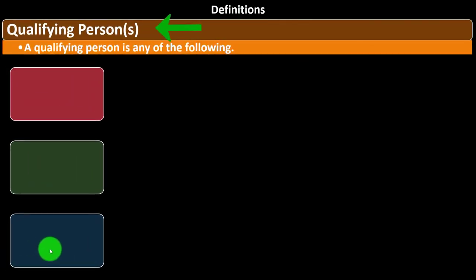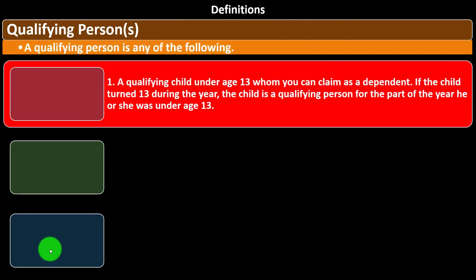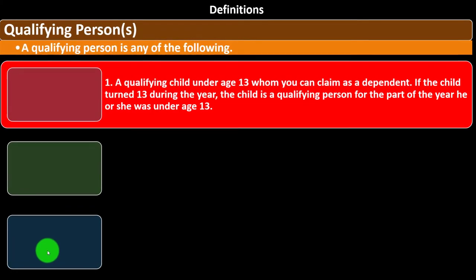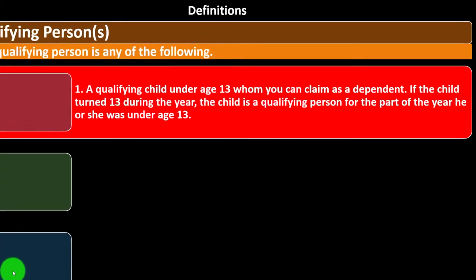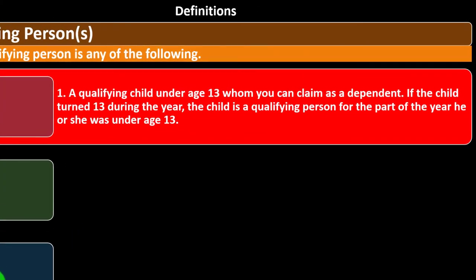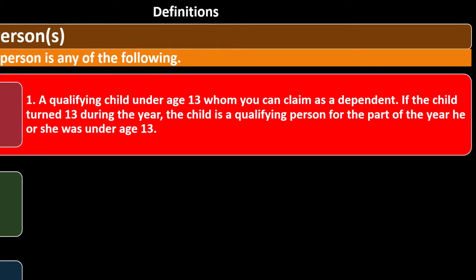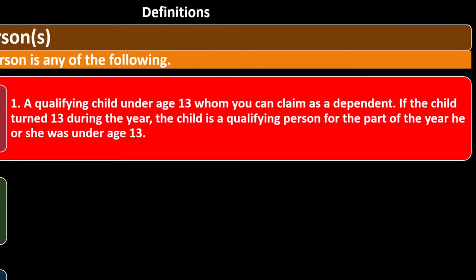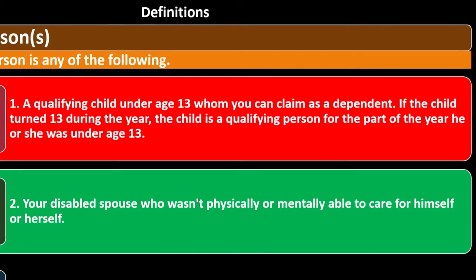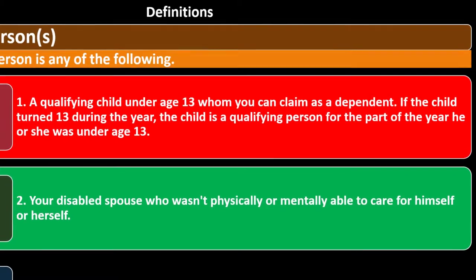Definitions continued: Qualified Persons. A qualified person is any of the following. One: a qualifying child under age 13 whom you can claim as a dependent. If the child turned 13 during the year, the child is a qualifying person for the part of the year he or she was under age 13 — so you have that fractional year rule.